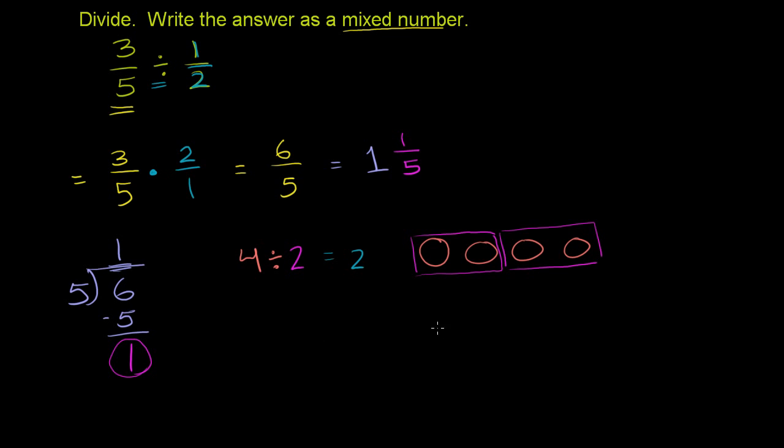Now, what if I took those same 4 objects? 1, 2, 3, 4. So I'm taking those same 4 objects. Instead of dividing them into groups of 2, I want to divide them into groups of 1 half. Which means each group will have half of an object in it. So let's say that would be one group right there. That is a second group. That is a third group. I think you see each group has half of a circle in it. That is the fourth. That's the fifth. That's the sixth. That's the seventh. And then that's the eighth. You have eight groups of 1 half. So this is equal to 8.